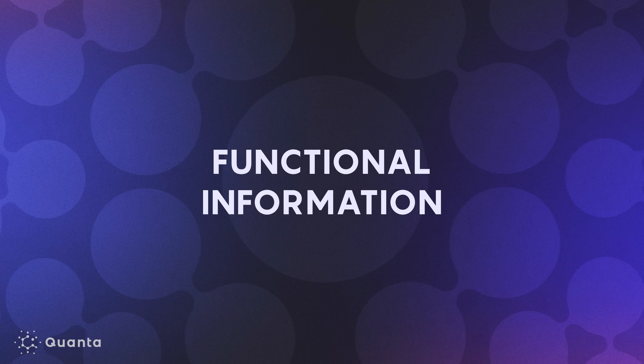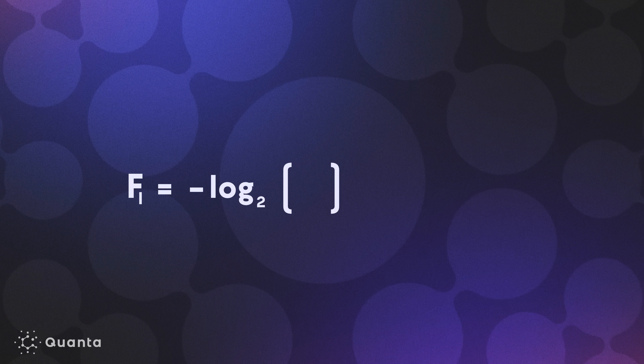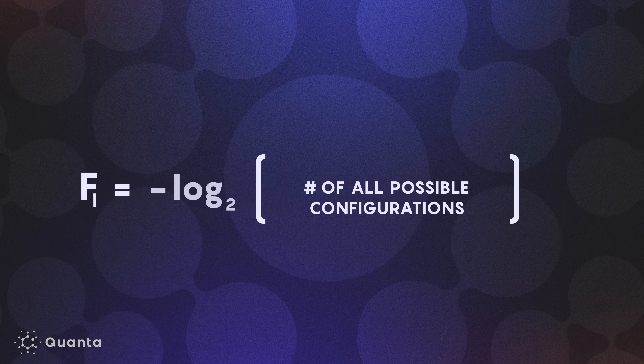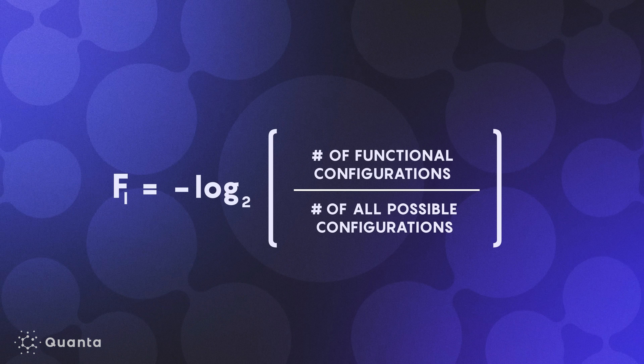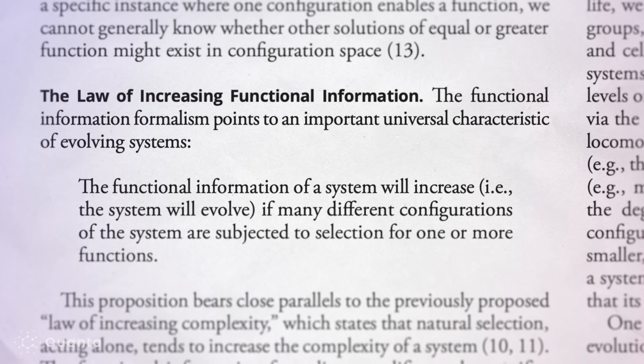The functional information of a system is characterized by two numbers: the total number of configurations that system can partake in, and the number of configurations that actually perform the function of interest. You get a fraction when you divide one number by the other. The math is pretty straightforward. The rarer something is, the higher its functional information. As you're ratcheting up more and more function, the functional information goes up.